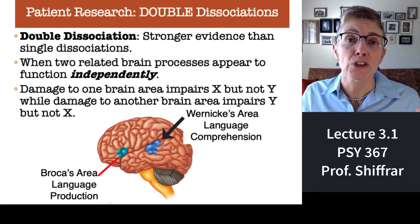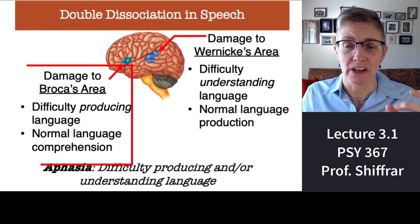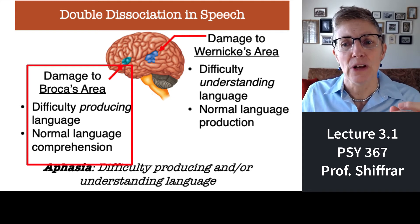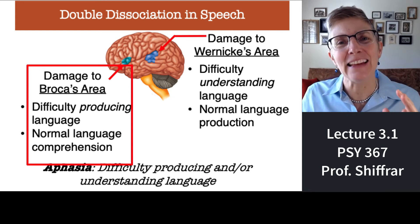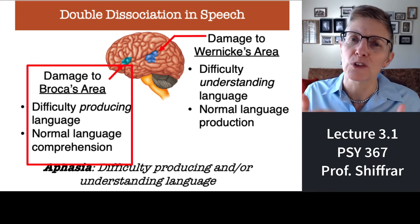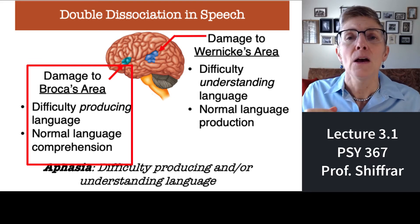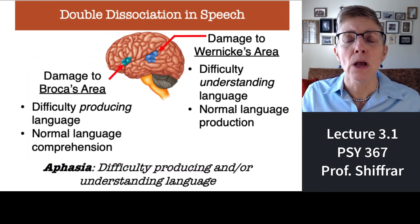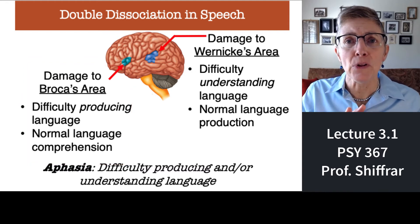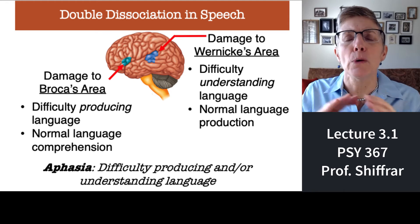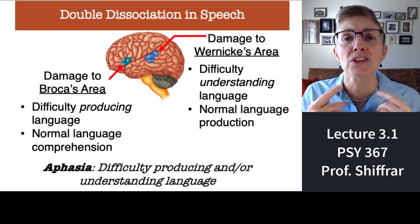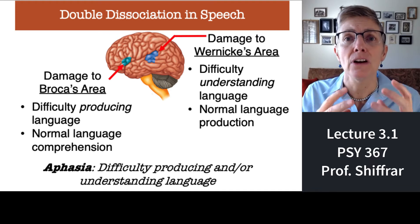People who, because of a stroke, have damage to Broca's area have difficulty producing language, but they understand language — they can understand what's being asked of them, but they can't produce a response. This is the same for both deaf and hearing people, so the modality of the language doesn't matter. You can have Broca's aphasia for verbal speech just as you can have Broca's aphasia for sign language.